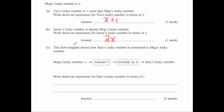The next question says this flow diagram shows how Sam's lucky number is connected to Meg's lucky number. So Meg's lucky number is x, and it says subtract 3 and then multiply by 2, and that's Sam's lucky number. Well there's two different ways to do this. The first bit is we're going to do x and take away 3, so that would be x minus 3. And then we need to multiply by 2. Well multiplying this by 2 would be, well double x is 2x, and double minus 3 would be minus 6. So the answer would be 2x minus 6.